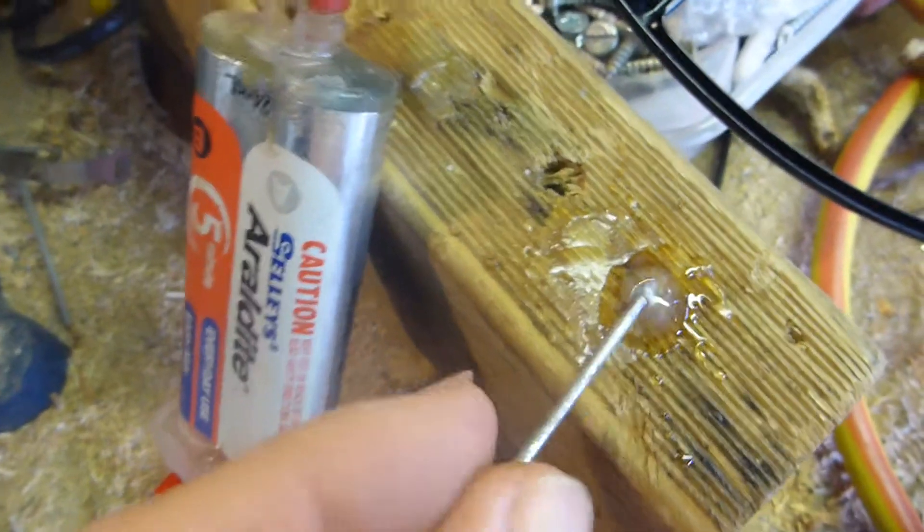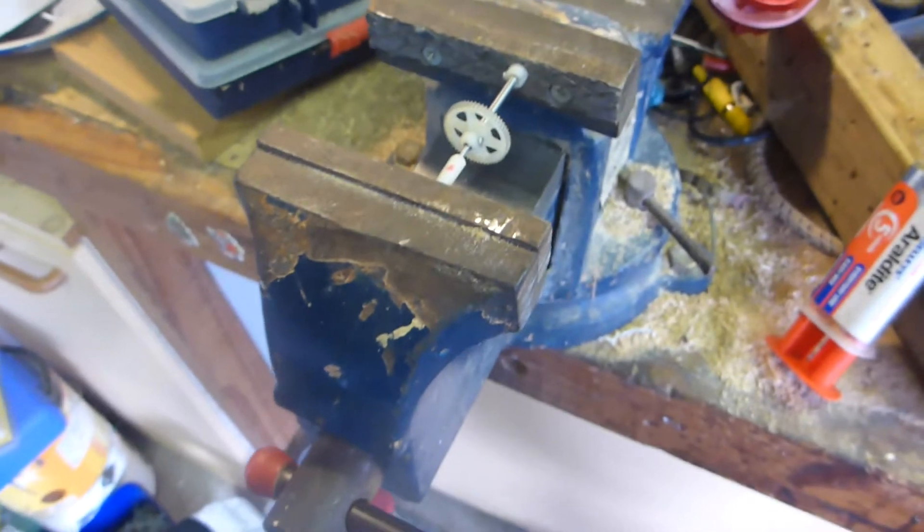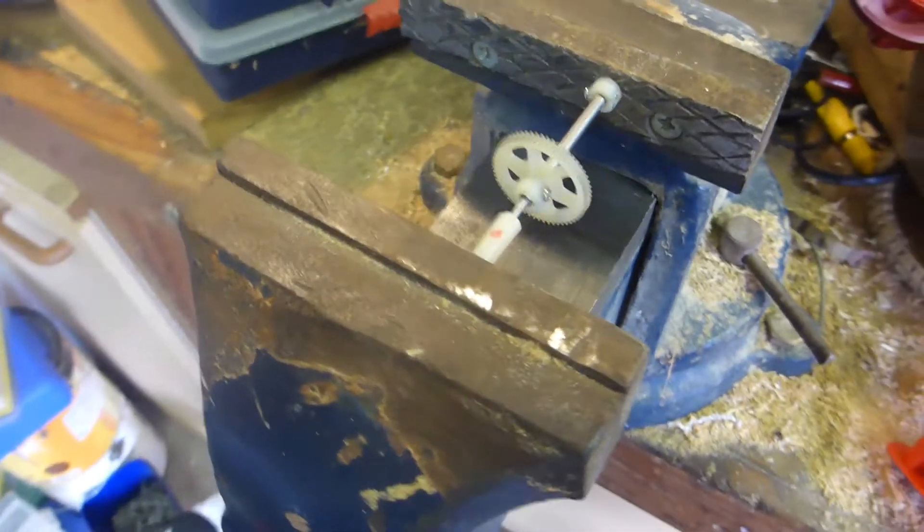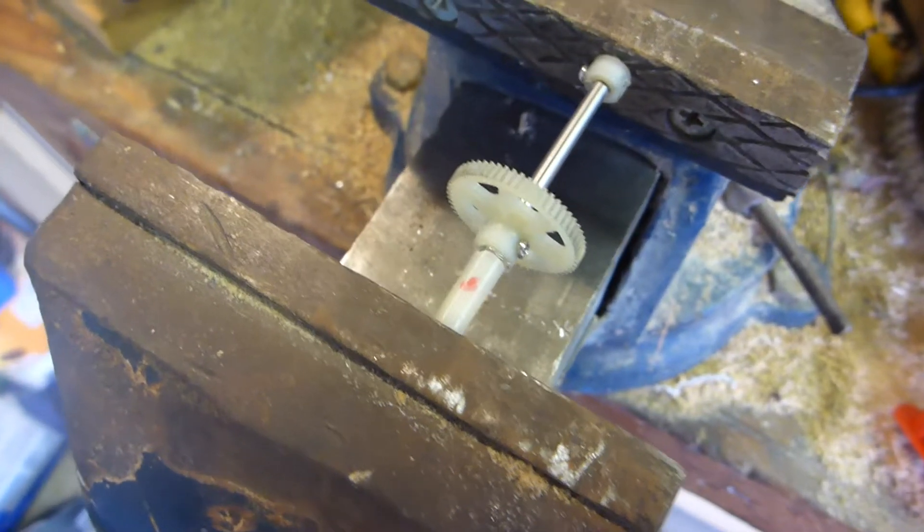What I've done is I'm just going to mix up a tiny bit of Araldite and put that along the shaft there, then squeeze it together in the vise. There is a lot of torque on this little gear, so it'll either spin off the first time it flies or it might hold.